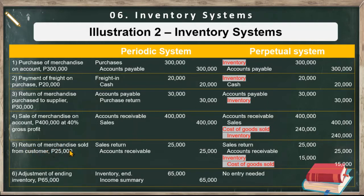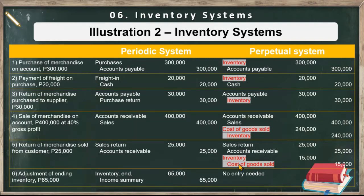Number five — return of merchandise sold from customer. Debit sales returns and credit accounts receivable. The same entry under the perpetual system, but with an additional entry. Since the customer returned goods, we restore the inventory — but we need to get the cost of that inventory. The worth of the inventory returned is 25,000, but that includes the gross profit. So we need to get the cost portion: 25,000 times 60% equals 15,000. Because of this entry, the cost of goods sold is reduced, since the sale was reversed.